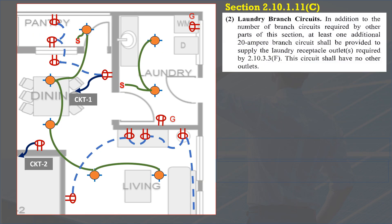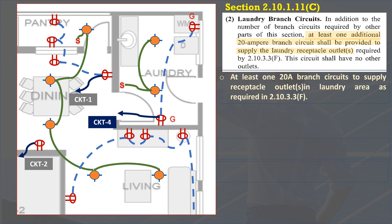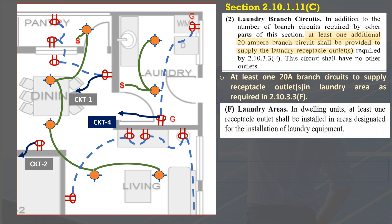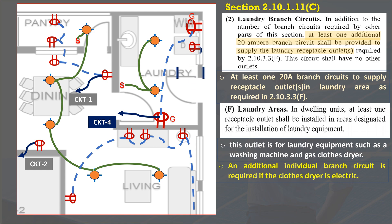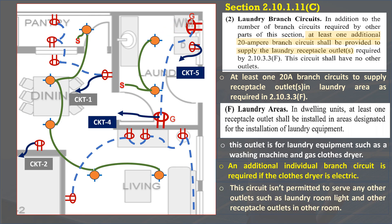Going back to Section 2.10.1.11C, paragraph 2, Laundry Branch Circuits: in addition to the number of branch circuits required by other parts of this section, at least one additional 20A branch circuit shall be provided to supply the laundry receptacle outlet required by 2.10.3.3F. This circuit shall have no other outlets. Laundry areas must have at least one 20A branch circuit for laundry equipment such as a washing machine and gas clothes dryer. An additional individual branch circuit is required if the clothes dryer is electric. This circuit is not permitted to serve other outlets, such as laundry room lights or receptacle outlets in different rooms.